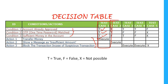In test case 2, account is approved and OTP is matched, but sufficient money is false — we don't have sufficient funds. So we execute action 2: show a message of insufficient amount. In test case 3, the account is approved and there is sufficient money, but OTP is not matched. Since OTP is not matched it is considered a suspicious transaction, so we execute action 3: block the transaction.